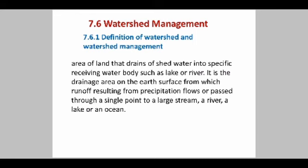Let's see watershed management. Watershed management is a study of relevant characteristics of a watershed aimed at the sustainable distribution of its resources, and aimed at creating and implementing plans, programs and projects to sustain and enhance the watershed functions of our crop area. The main purpose of a watershed is a land area that drains to a stream, lake, river or canal. It affects the water quality in the surrounding water body. A healthy watershed not only helps to protect water quality but also provides greater benefits to people, farms and animals living there.